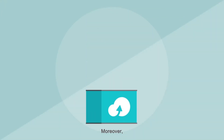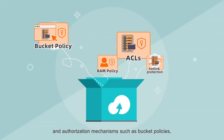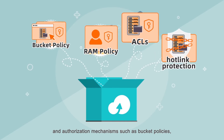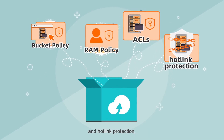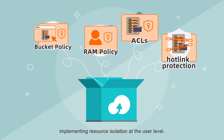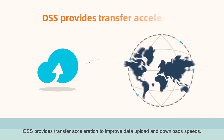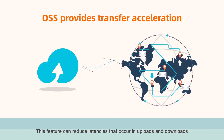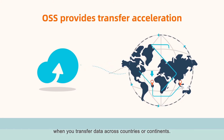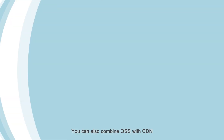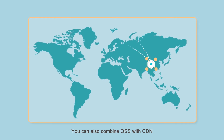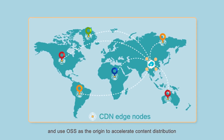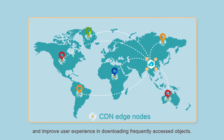Moreover, OSS supports authentication and authorization mechanisms such as bucket policies, RAM policies, ACLs, and hotlink protection, implementing resource isolation at the user level. OSS provides transfer acceleration to improve data upload and download speeds. This feature can reduce latencies that occur in uploads and downloads when you transfer data across countries or continents, improving user experience. You can also combine OSS with CDN and use OSS as the origin to accelerate content distribution and improve user experience in downloading frequently accessed objects.